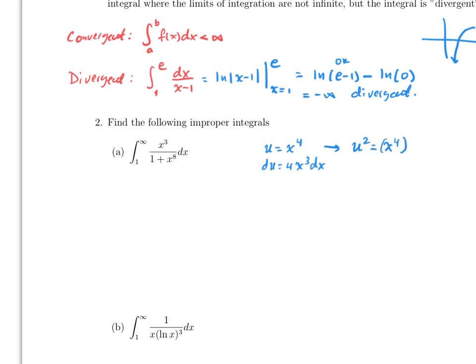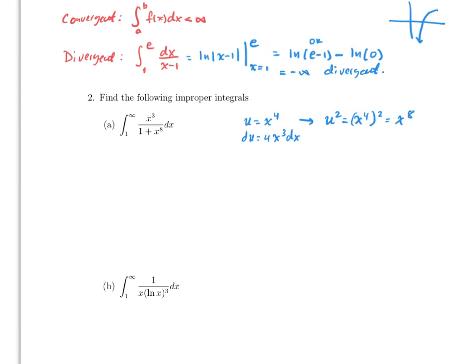Then du equals 4x³ dx. Also notice that u² equals x⁸. After substitution the integral becomes (1/4) times the integral of du over (1 plus u²). Notice that when x goes from 1 to infinity, u also goes from 1 to infinity, since 1⁴ equals 1 and infinity to the fourth is still infinity.